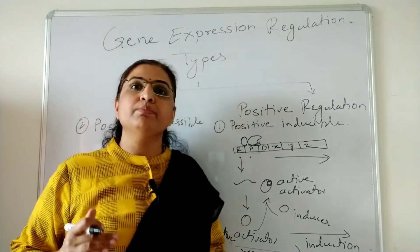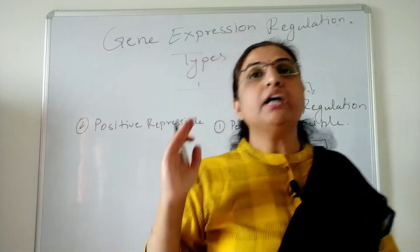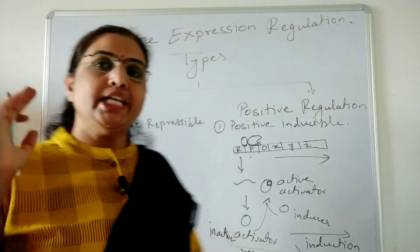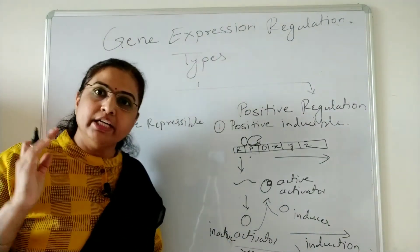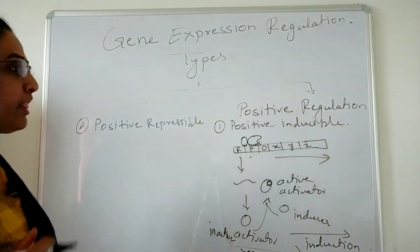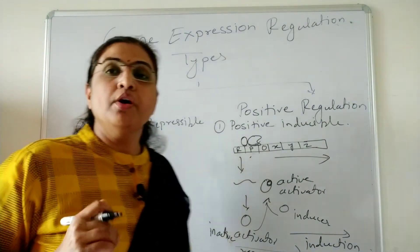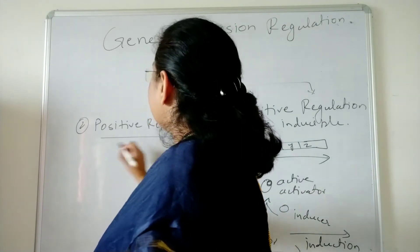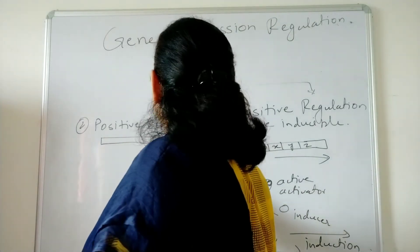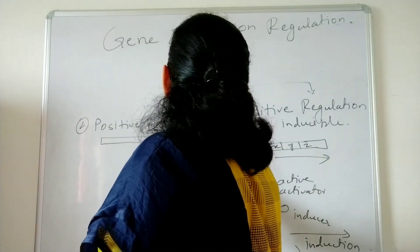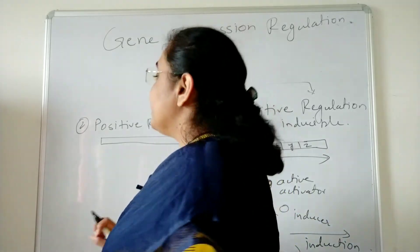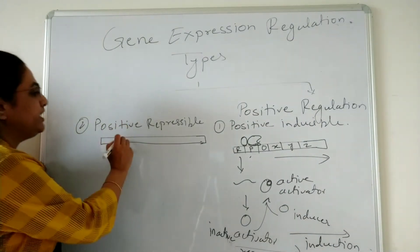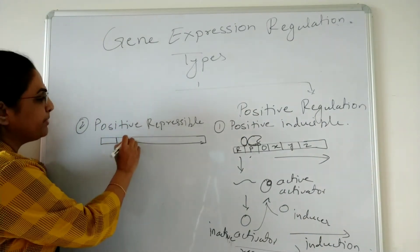So in positive inducible regulation there are two stages: the first is repression and the second is induction. Now moving to positive repressible regulation — it also has two stages, but they are exactly opposite: the first stage is induction and the second stage is repression.